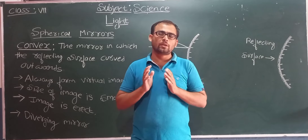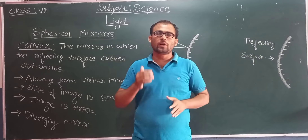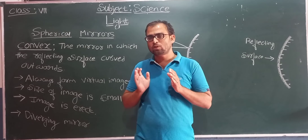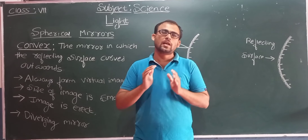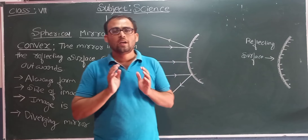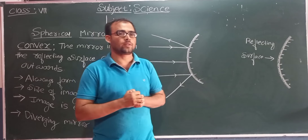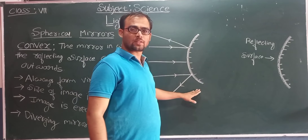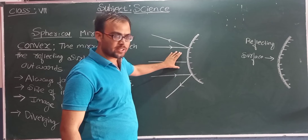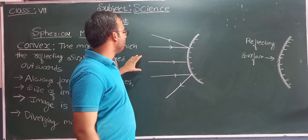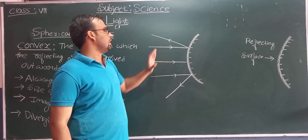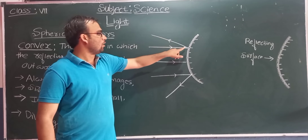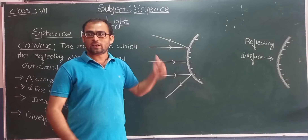Most of the time the image formed by the concave mirror is inverted, and sometimes it is erect. But the image formed by the convex mirror is erect — erect means straight and upright. Convex mirror is called a diverging mirror. Whenever light rays are incident on the reflecting surface of a convex mirror, after reflection the rays diverge from a point.